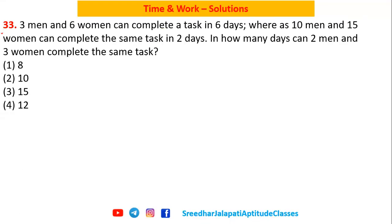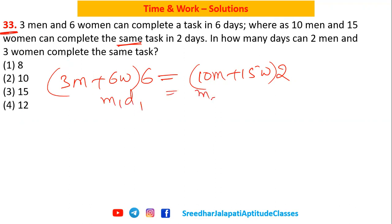Here is the solution for question number 33 from time and work. 3 men and 6 women can complete the job in 6 days, whereas 10 men and 15 women take 2 days to complete the same task. Since the task is same, I can equate. What did I apply here? m1*d1 equals m2*d2.